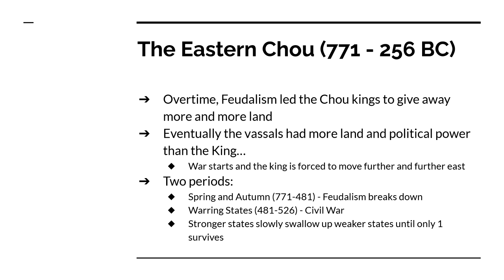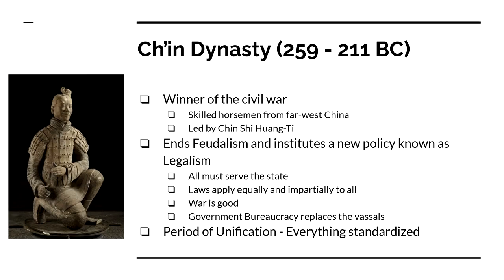Originally there were somewhere around 100 feudal states; during the warring period that 100 goes down to seven, and then at the end of the warring period there's only one survivor. That one survivor is going to recreate the Chinese government. The winner of that civil war is the Qin dynasty.